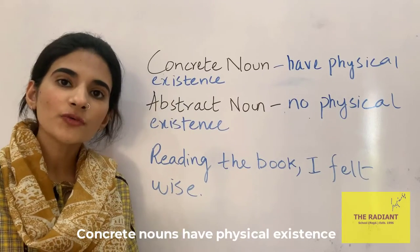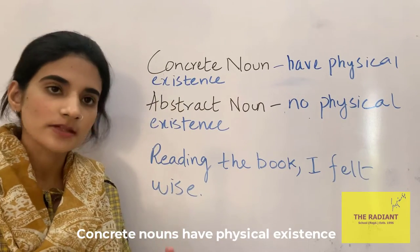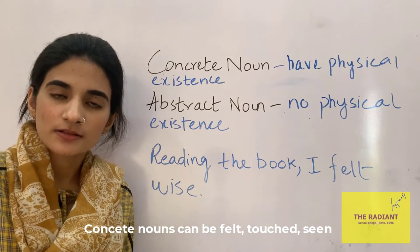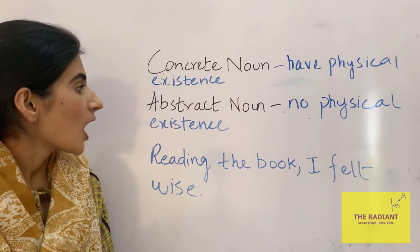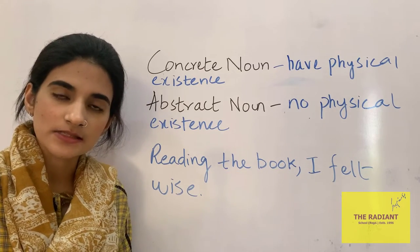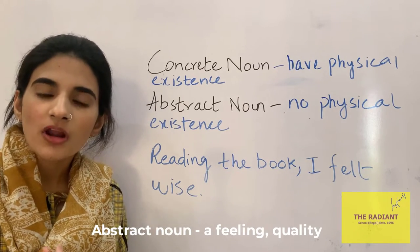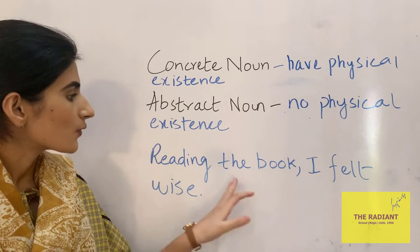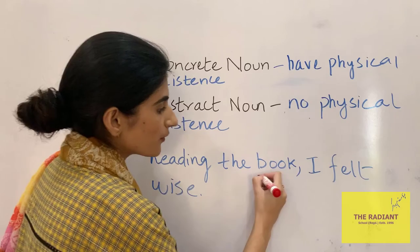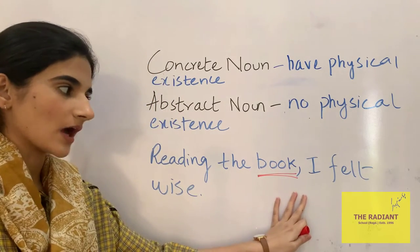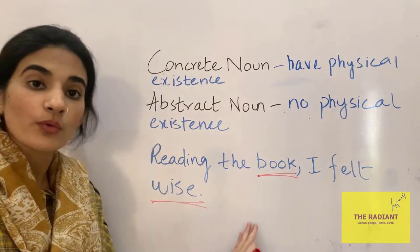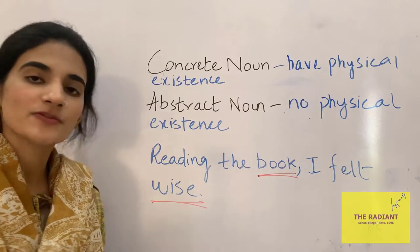A concrete noun has a physical existence — it is something that can be felt, touched, or seen. However, an abstract noun has no physical existence; it's a feeling or a quality. For example, reading the book, I felt wise. The book is a concrete noun, while wise or wisdom is an abstract noun.